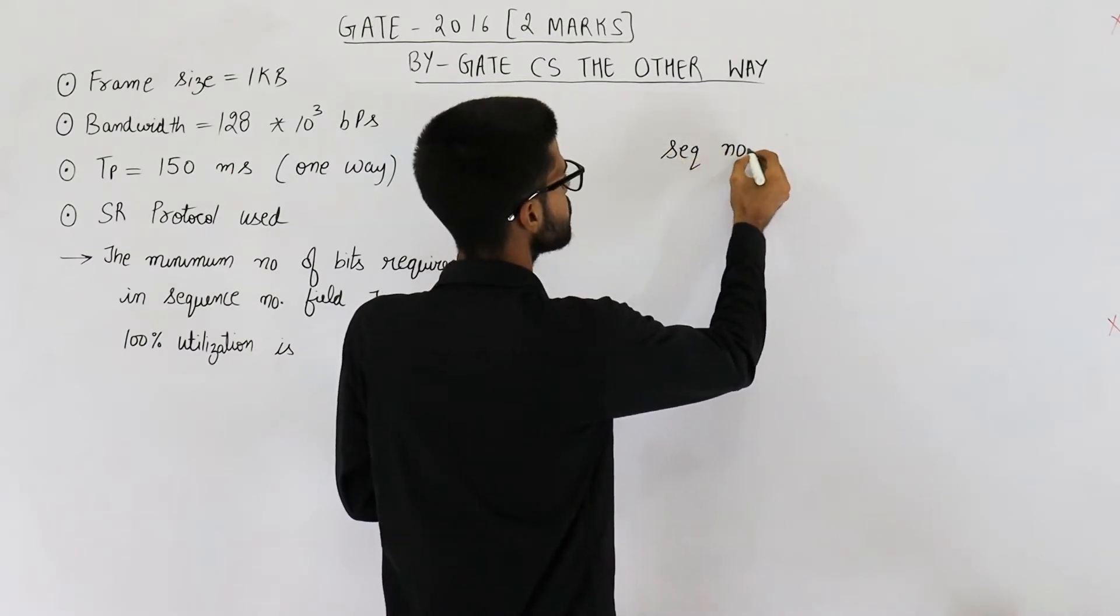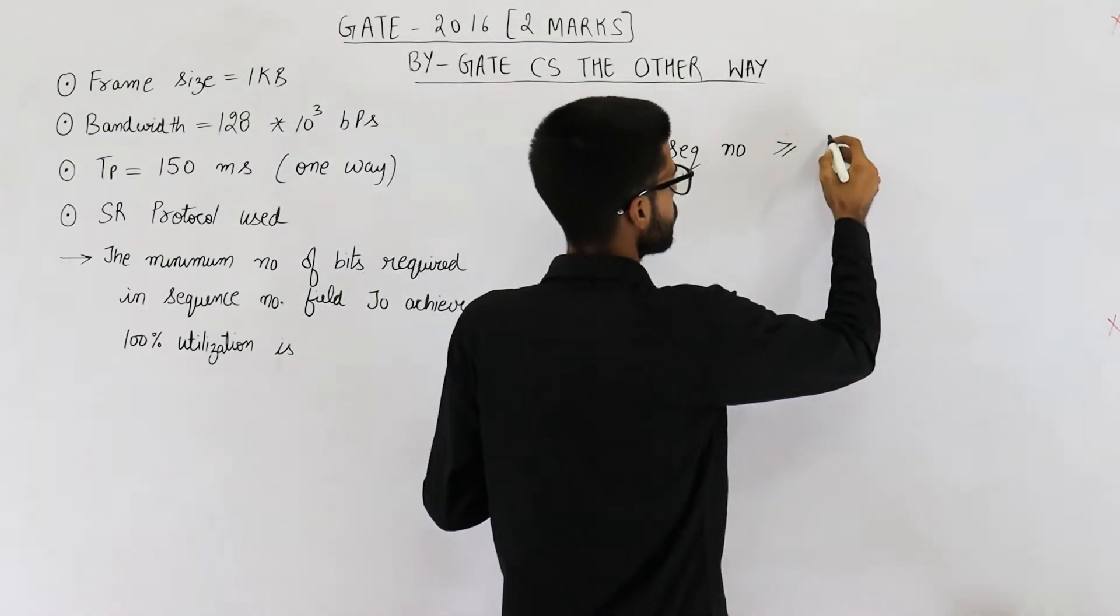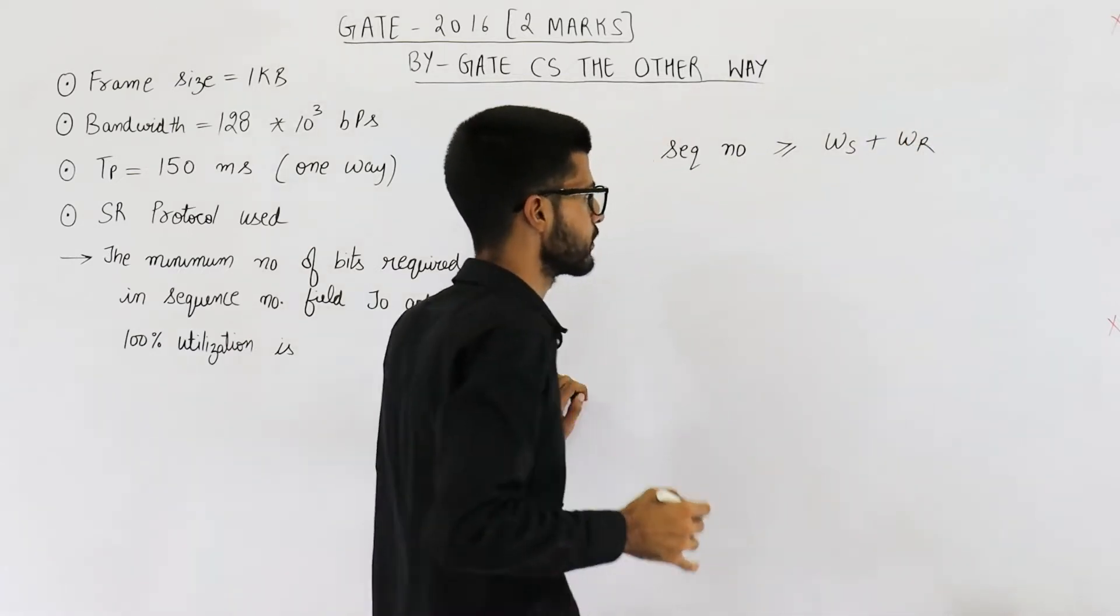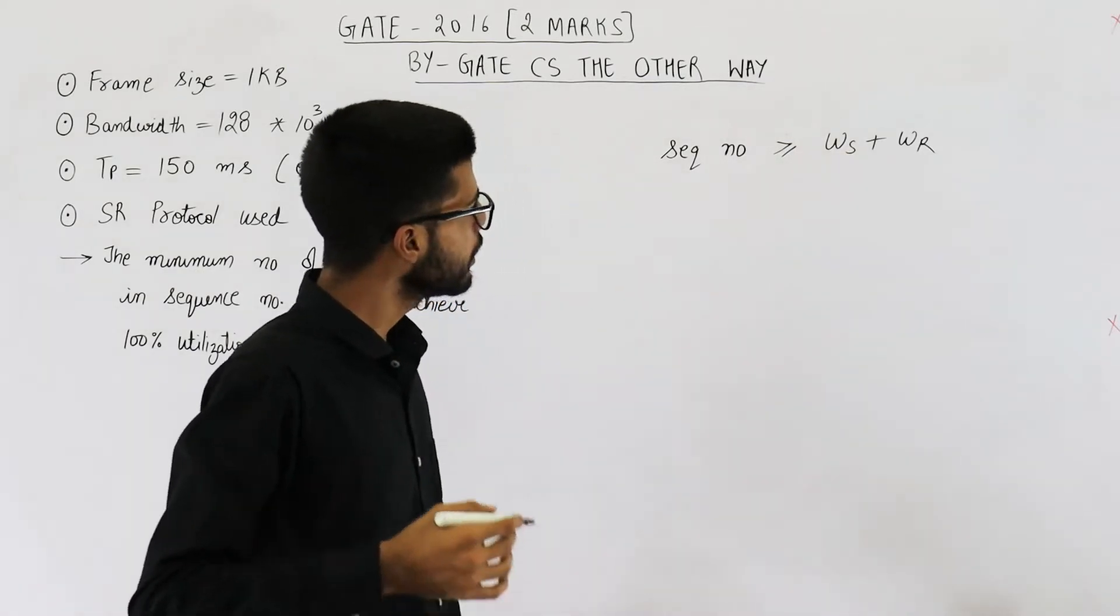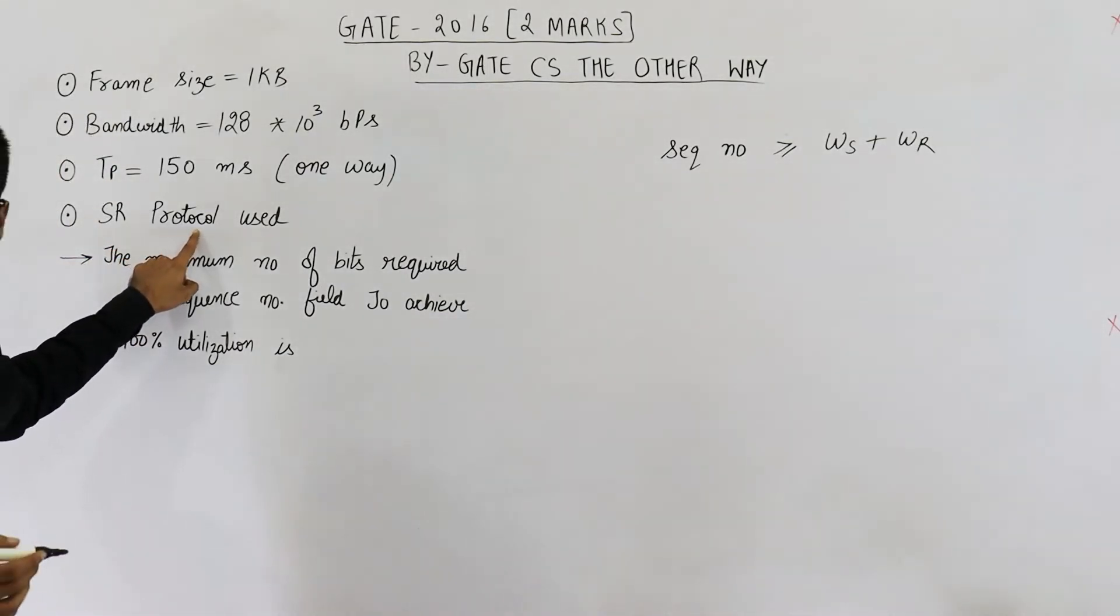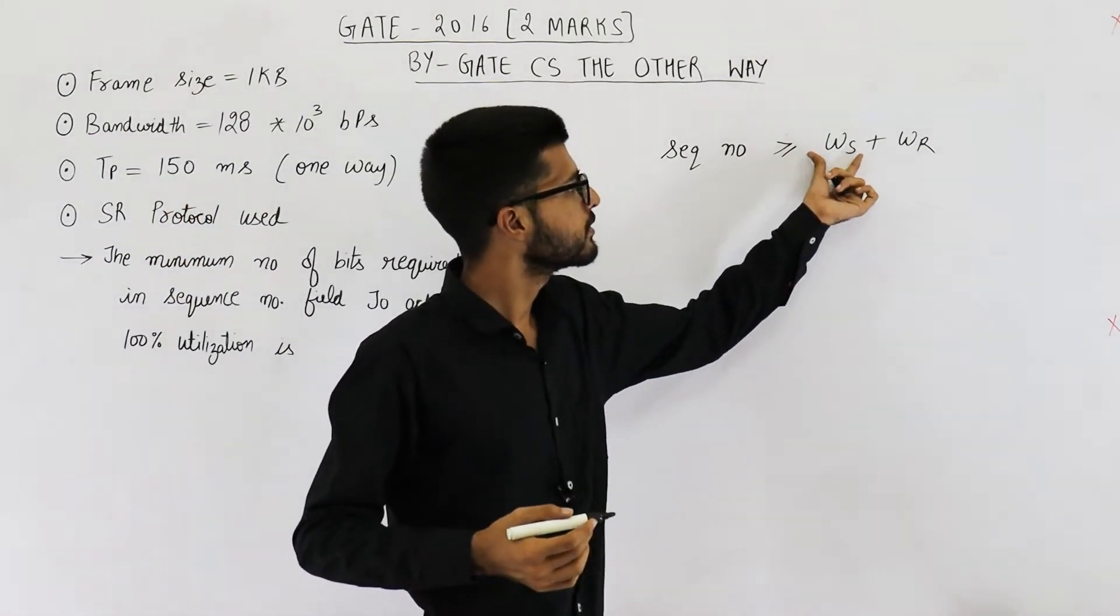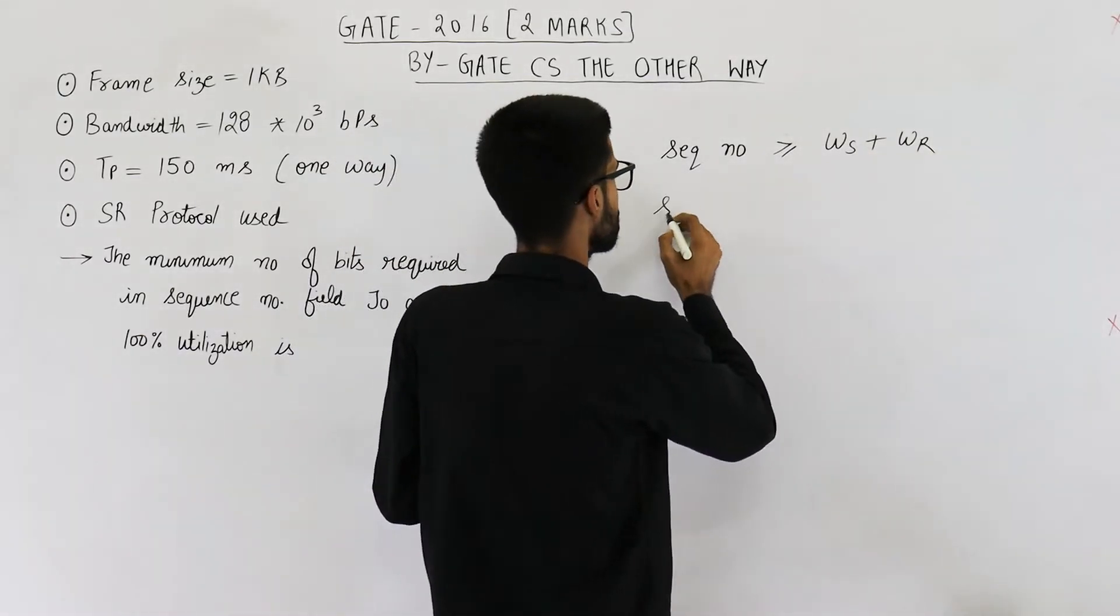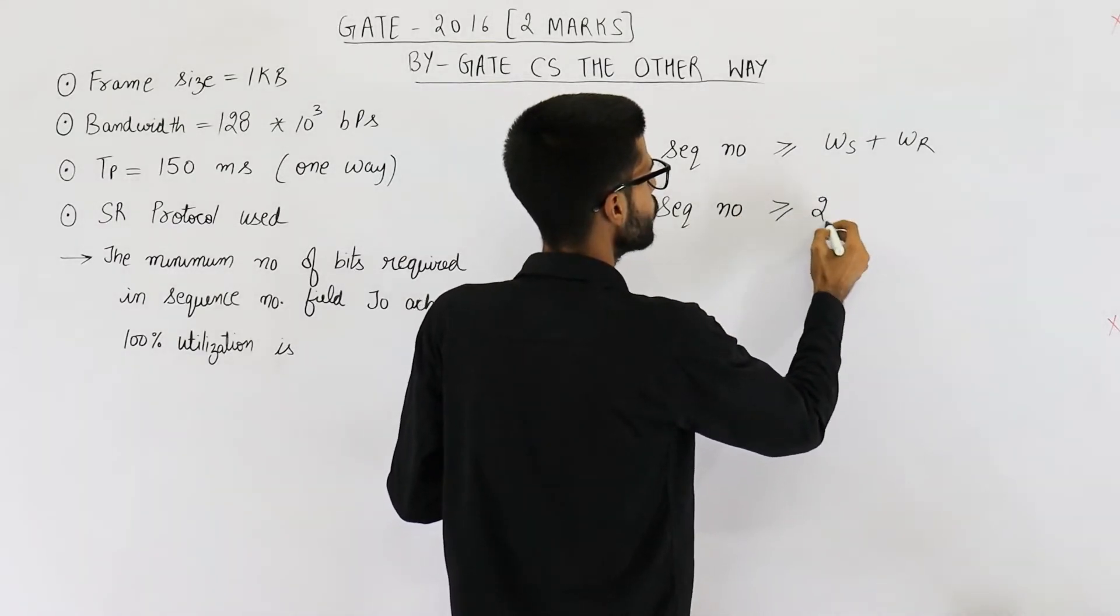Minimum sequence numbers depend on sender window size and the receiver window size. So the minimum number of sequence numbers is sender window size plus receiver window size. That means we need at least these many sequence numbers. Now they are also saying that we are using SR protocol, selective repeat or selective retransmission. In case of SR protocol, sender window size and receiver window size is equal.